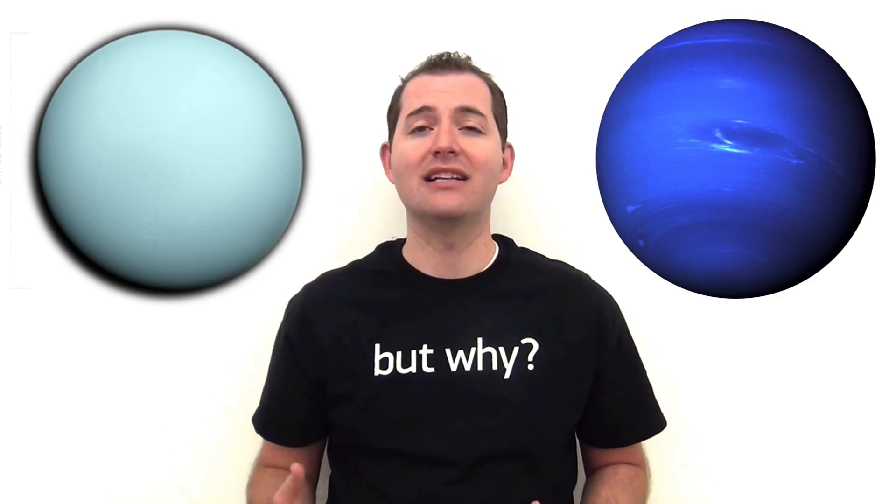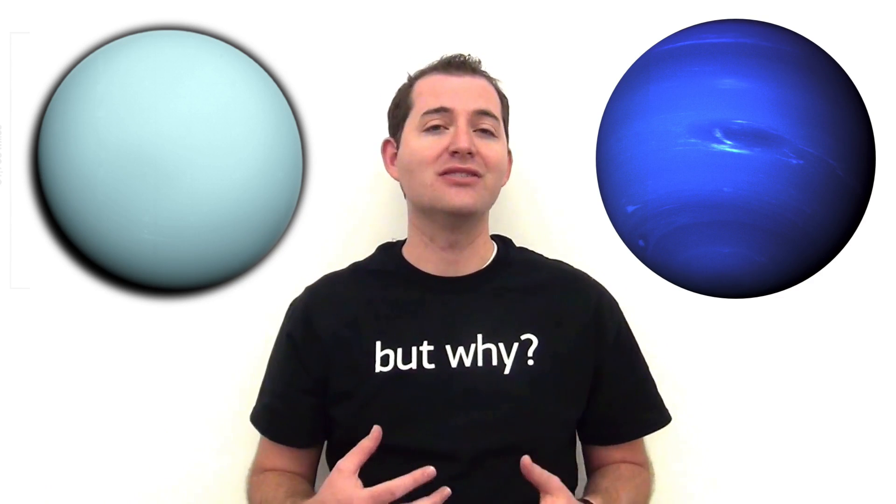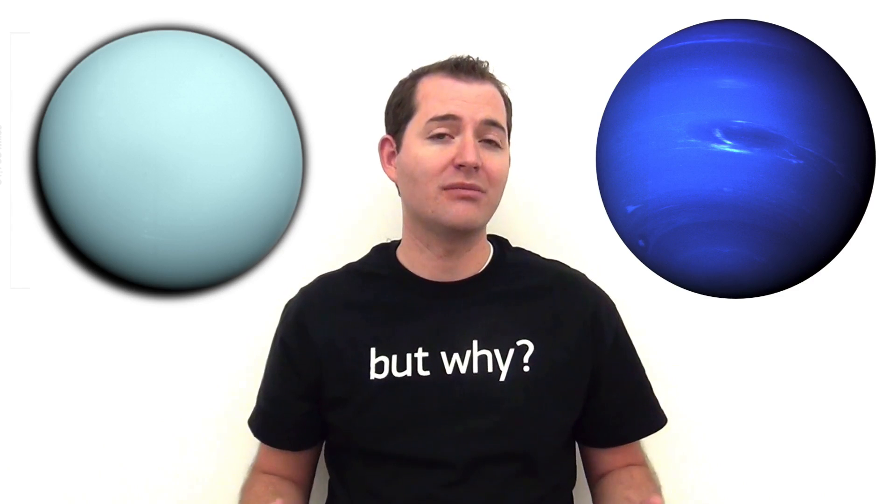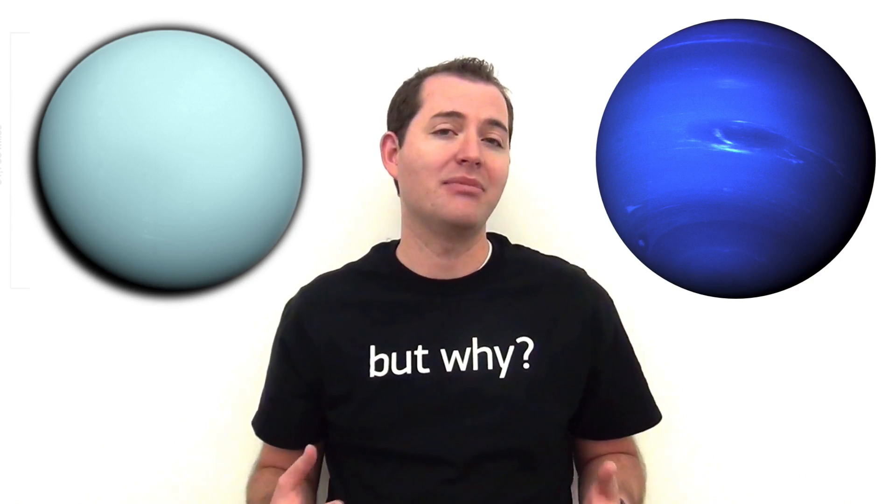Smaller gas planets such as Uranus and Neptune typically take longer to form and are thought to have started after planets like Jupiter and Saturn. There is not as much mass left around for them to gather up, and that makes them smaller.